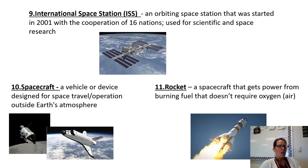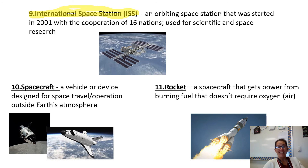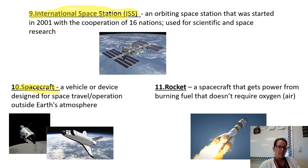We talked about a space station — now we're going to talk about the International Space Station specifically. The ISS is orbiting the Earth right now, and it was started in 2001 with the cooperation of 16 different nations. It's used for scientific and space research.